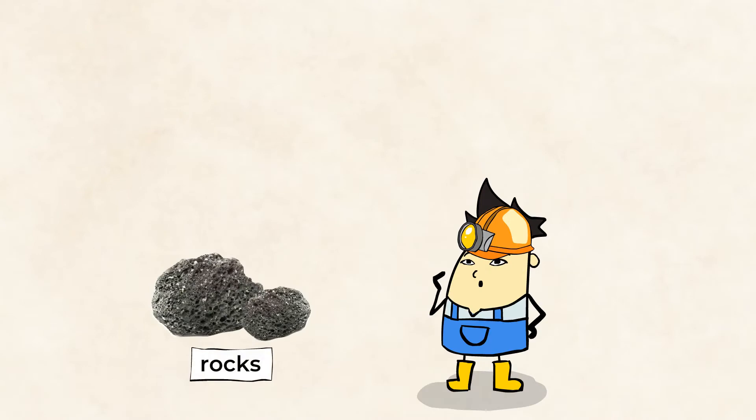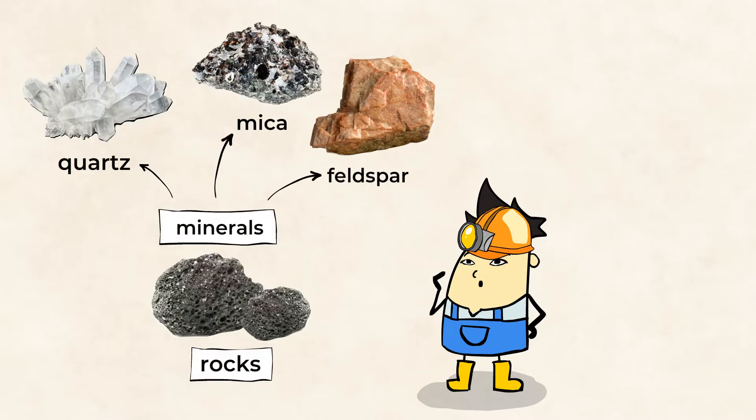Rocks are solids made up of a bunch of different minerals. Those minerals can include quartz, mica, and feldspar. Some rocks are made up of just one mineral, like shiny silver.